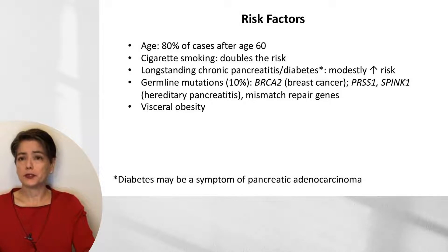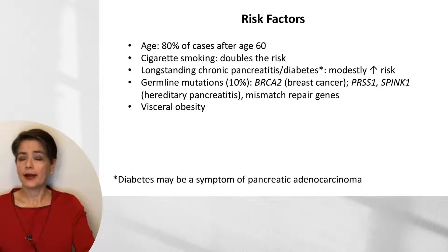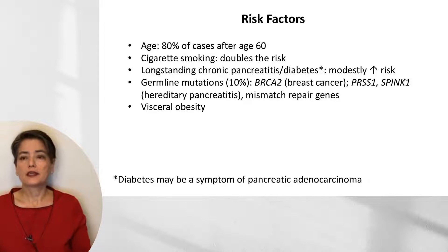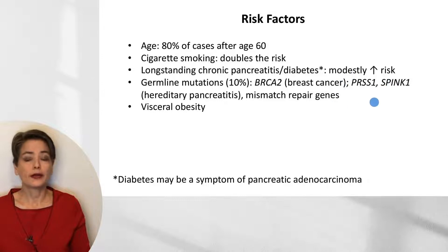There are a number of risk factors associated with adenocarcinoma of the pancreas. One is age — more than 80% of cases occur after age 60, making it very uncommon in a young population. Cigarette smoking doubles the risk. Longstanding chronic pancreatitis gives a modestly increased risk, with the exception of patients with chronic pancreatitis secondary to a PRSS1 mutation.